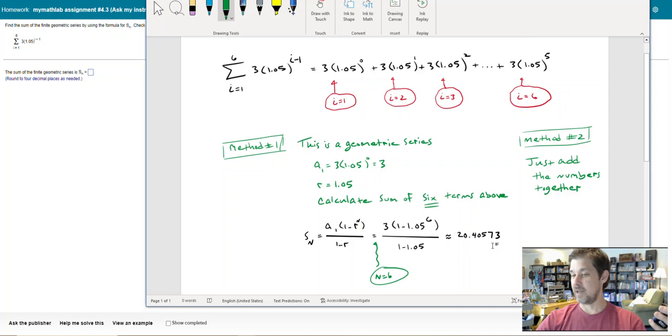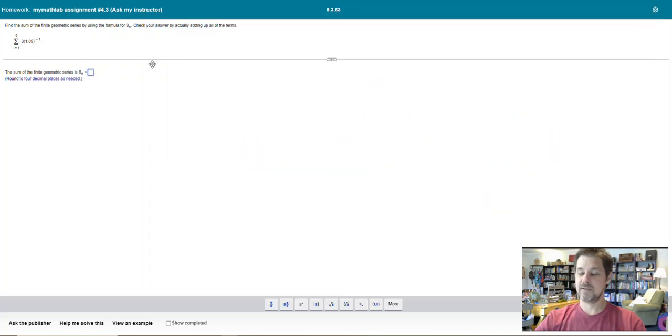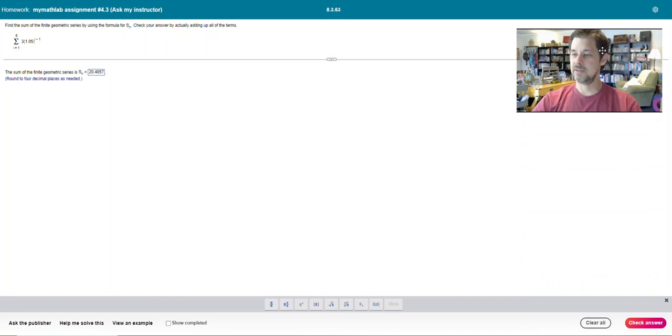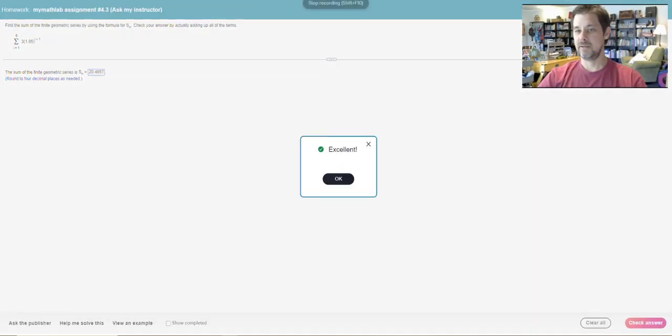So no matter what, that's what you get. This formula is just meant to be a shortcut to that. So let's put the answer in. I notice here it says round to four decimal places. I'll get 20.4057 if I round that to four decimal places, it's going to look like that. And we'll check it, and there it is.